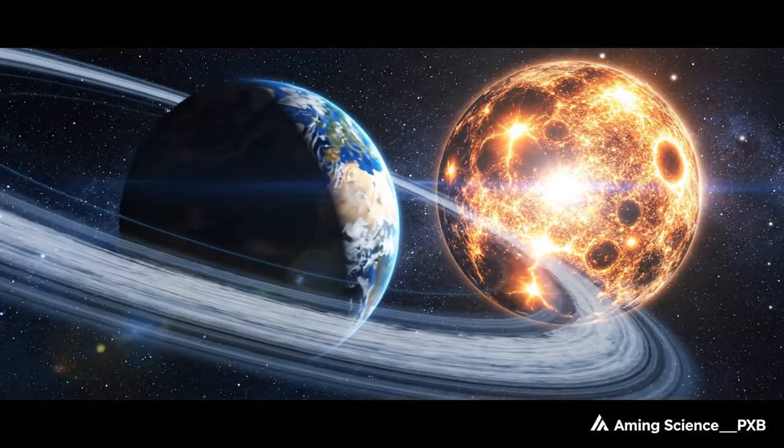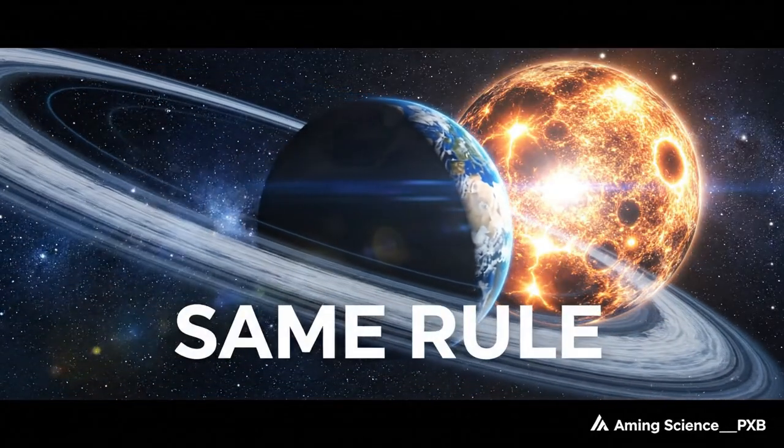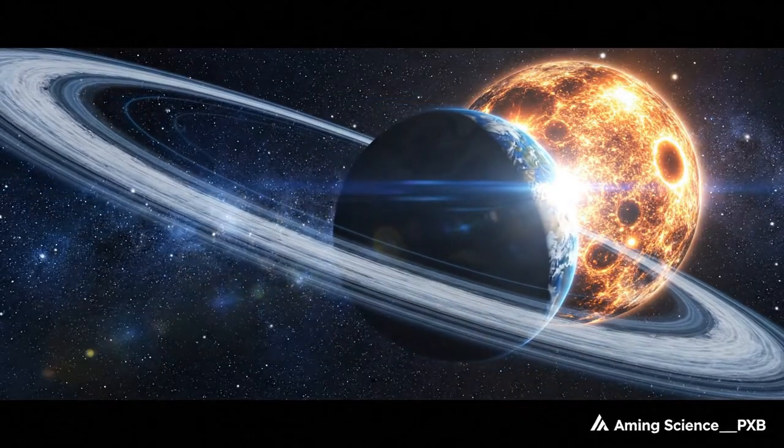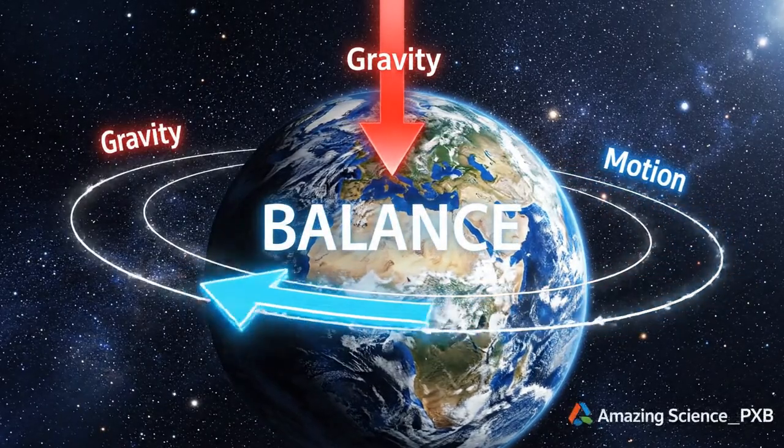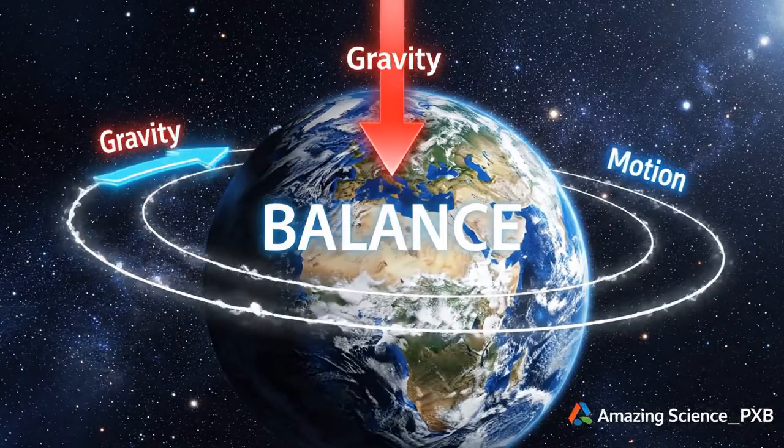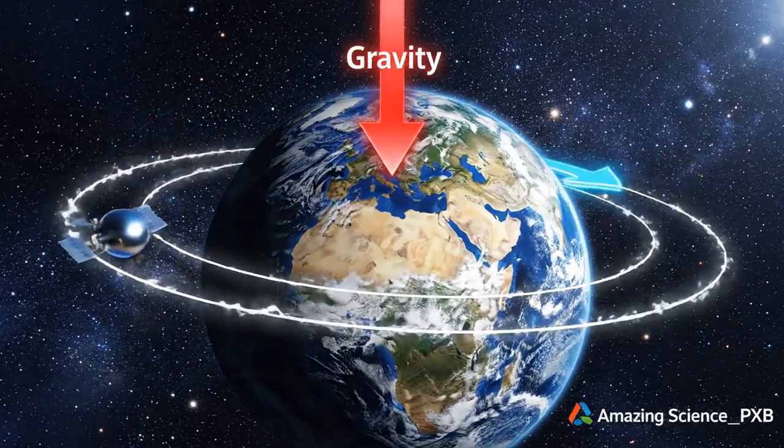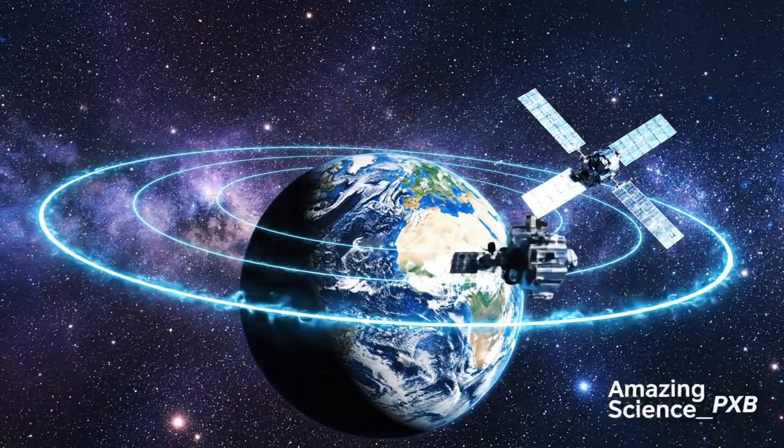Planets behave the same way. Gravity pulls inward. Motion pushes forward. This balance creates stable orbits.